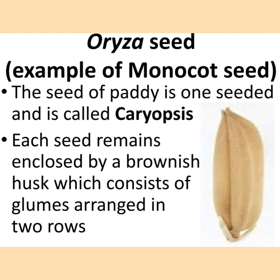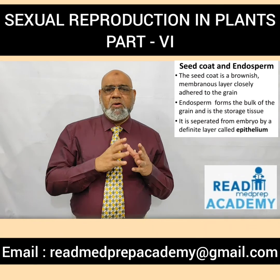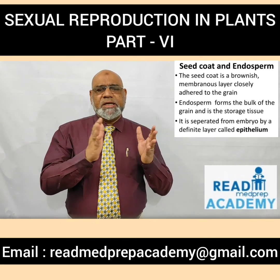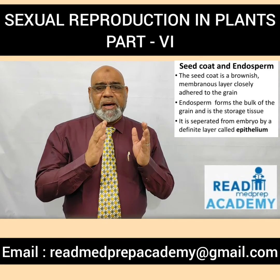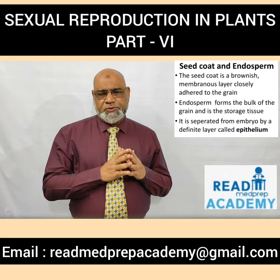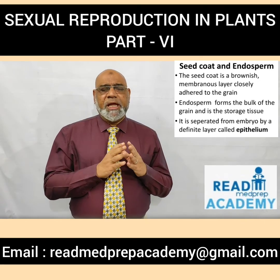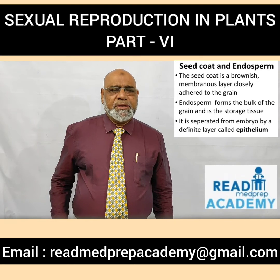Now let us discuss the monocot seed, with the example of Oryza sativa (rice). The seed of paddy is one-seeded and is called a caryopsis. Each seed remains enclosed by a brownish husk consisting of glumes arranged in two rows. The seed coat is a brownish membranous layer closely adherent to the grain. The endosperm forms the bulk of the grain and is a storage tissue, separated from the embryo by a definite layer called the epithelium.